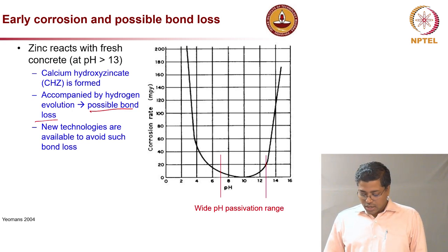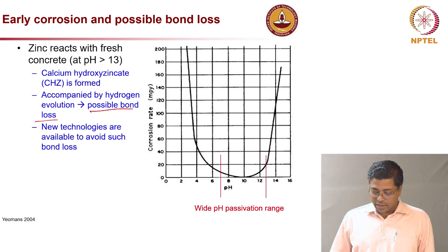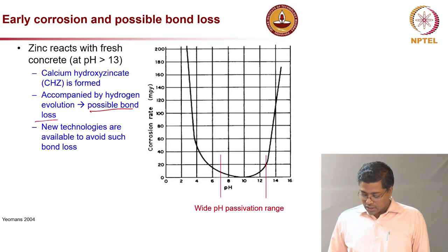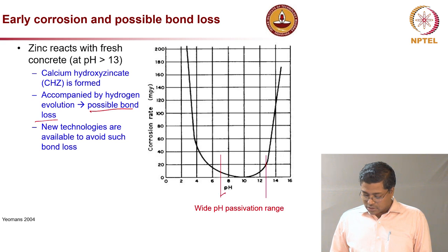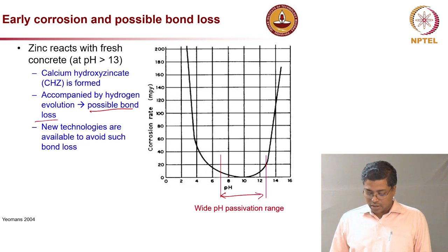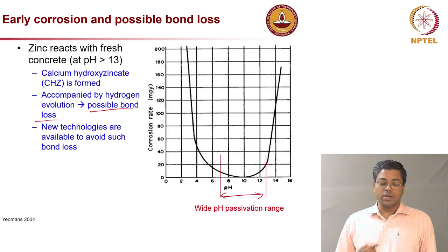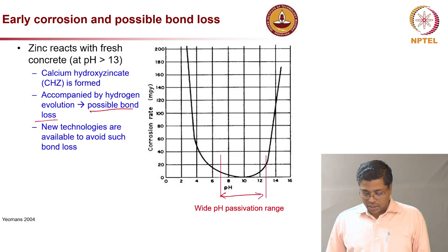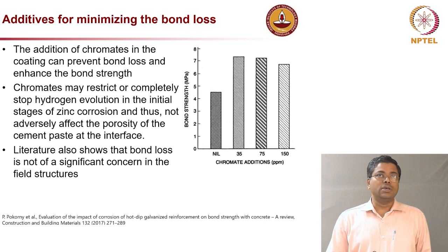There is also a wide pH passivation range for zinc — the corrosion rate is very low when the pH is in this range. Even when the concrete gets hardened in the long run and the pH is about 8, you still have a very low corrosion rate. This is a very good advantage when talking about carbonation-induced corrosion.